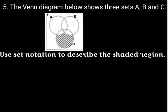Question 5: The Venn diagram below shows three sets A, B, and C. You can see the shaded part down here where set C is located.